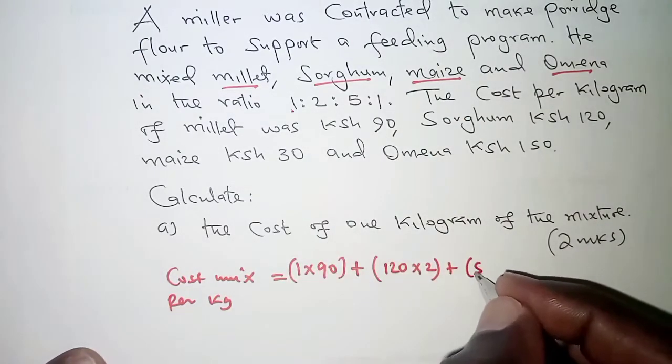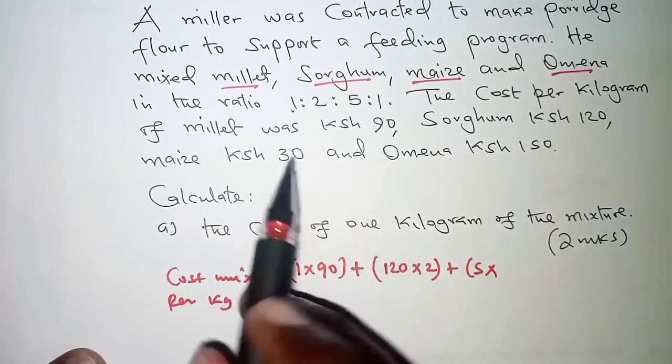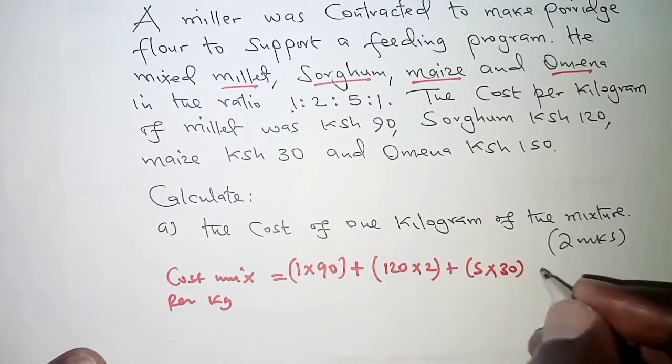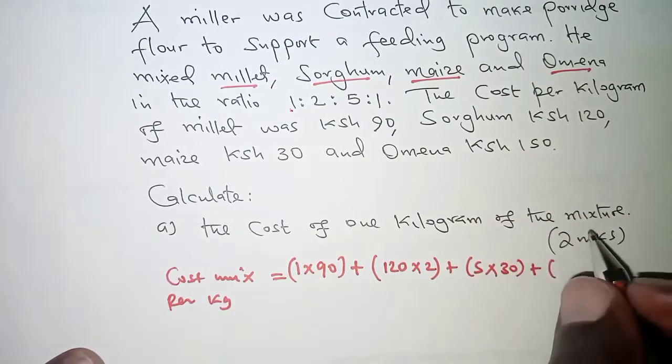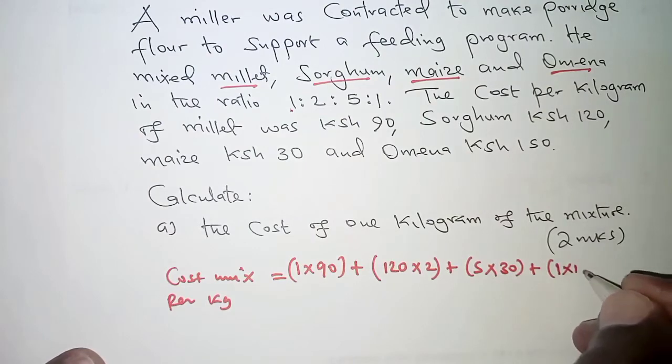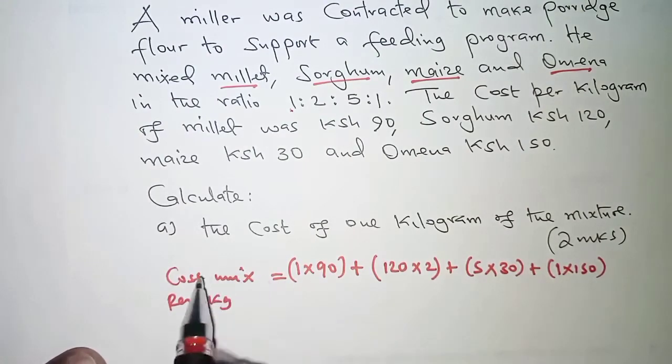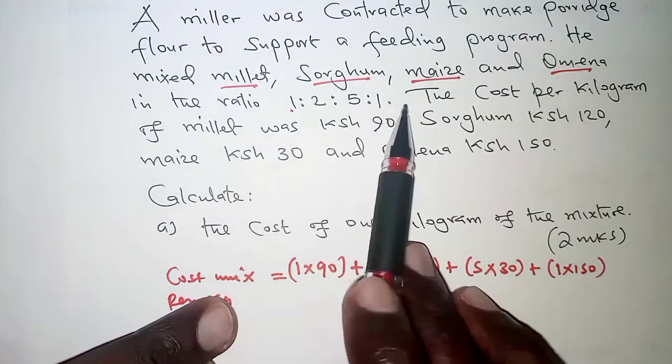Then we have 5 kilograms for maize. And then each kilogram is 30 shillings. And finally, for omena, we have 1 kilogram is 150. And there is only 1 kilogram. So, 1 times 150.